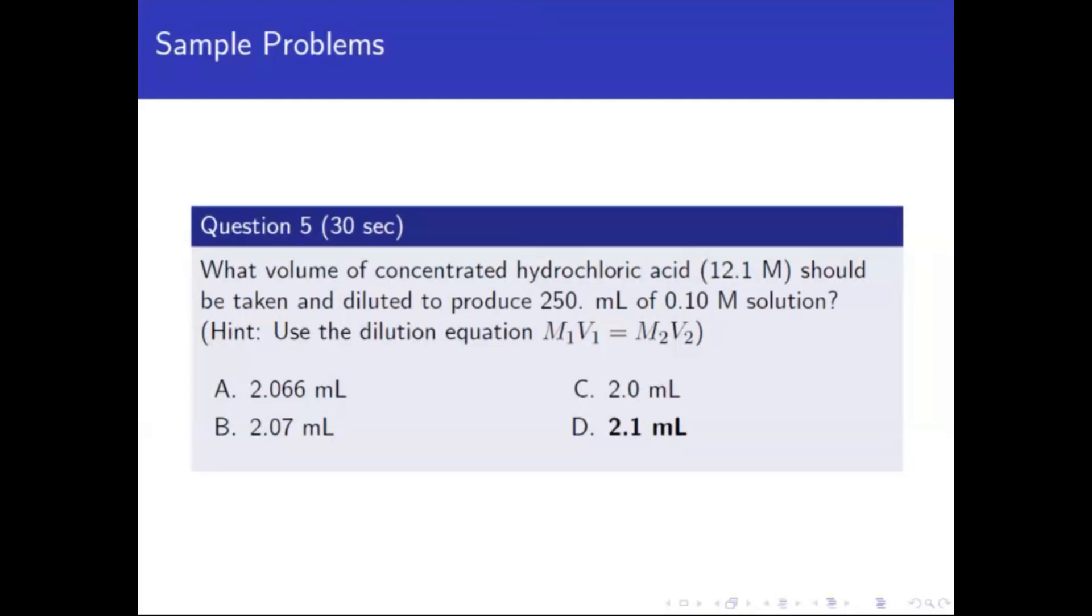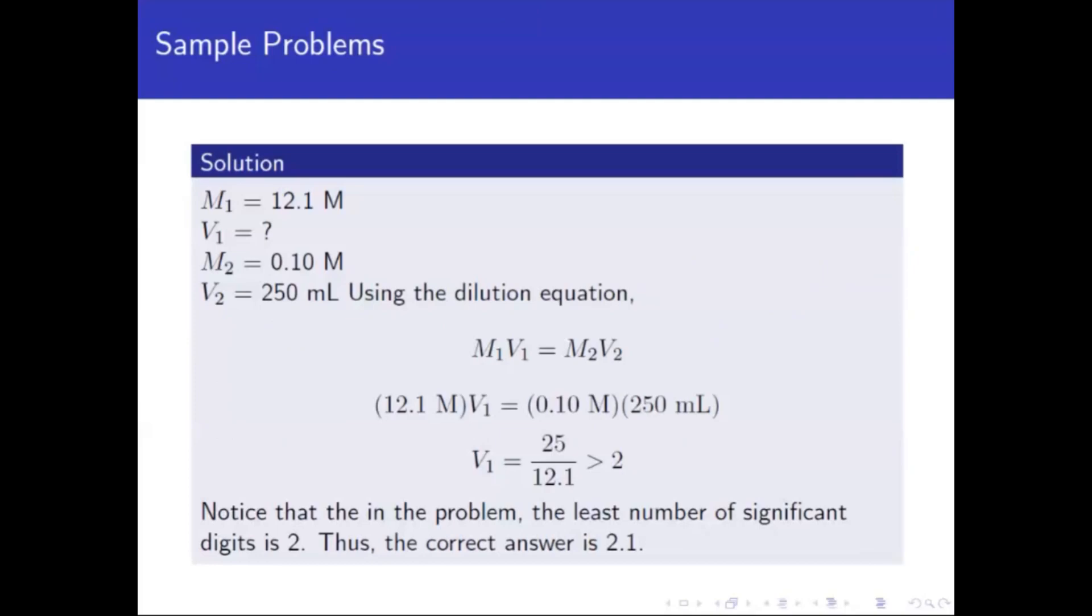Now how do we solve for the value? So let's take a look at the solution. We are given M1 is 12.1 molar, V1 is unknown, M2 is 0.10 molar, and V2 is 250 mL.